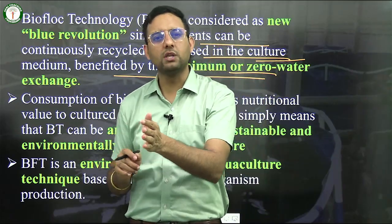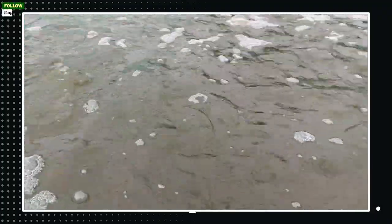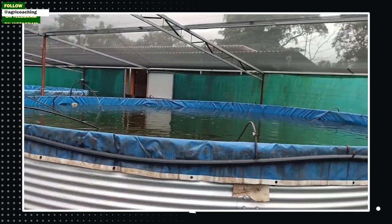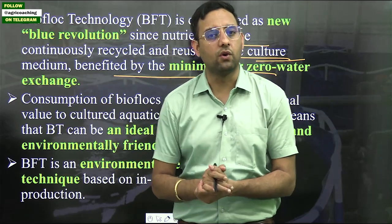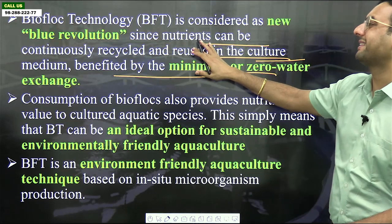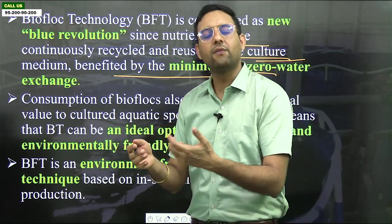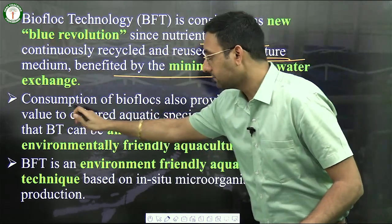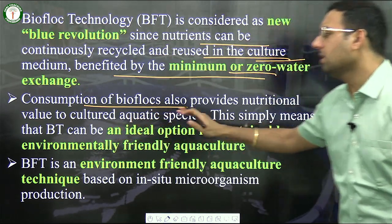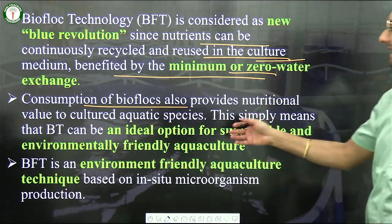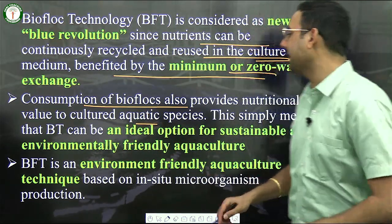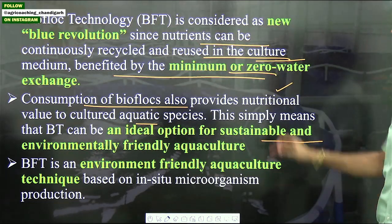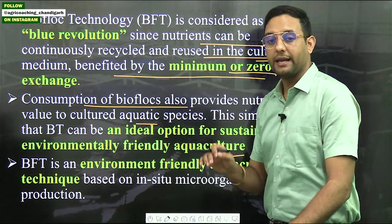In ordinary fisheries, water must be replaced again and again. But in BFT, bacteria filter the water so we don't need to exchange it. By using minimum or zero water exchange and recycling nutrients, we use the same water and nutrients repeatedly, reducing costs. Consumption of biofloc also provides nutritional value to the cultured aquatic species — the fish eating bacteria receives good nutrition.